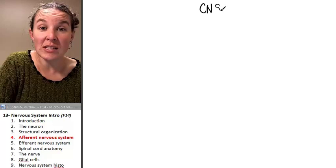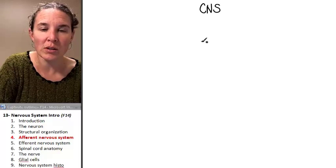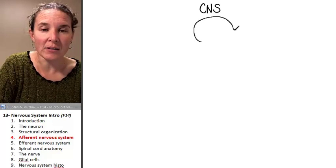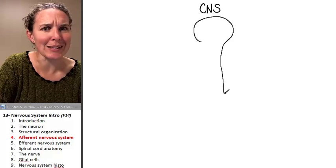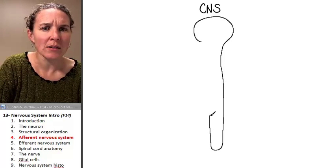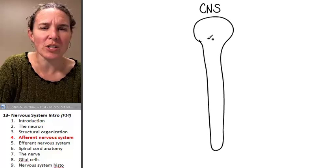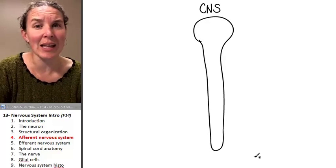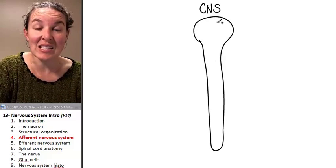Central nervous system included who? The brain, which looks something like this, and who else? The spinal cord, which clearly looks something like that. This is the central nervous system.